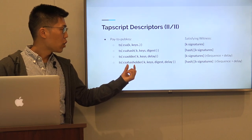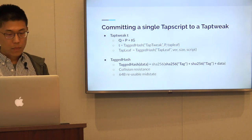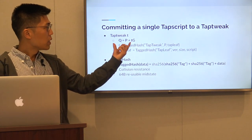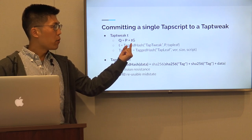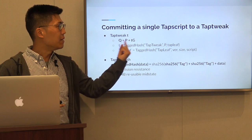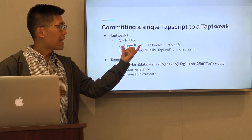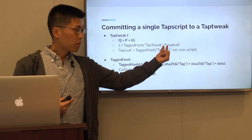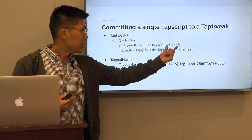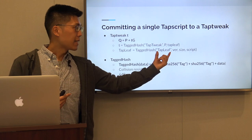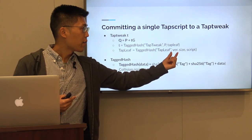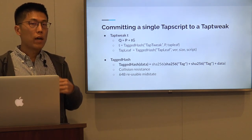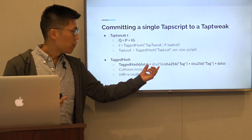Finally, I'd like to talk about how we can commit a single tapscript to a tap tweak. Tweaking a public key is as follows: we take the internal key and add to it the tweak point of tweak T. In the case of taproot, T is a tagged hash with the tag 'tap tweak', which also contains the internal key P. Since we're committing a single tapscript, the tap leaf is the tagged hash with the tag 'tap leaf' and the single script we're committing — including the tap leaf version, the size of the script, and the script itself.